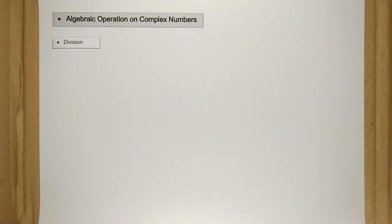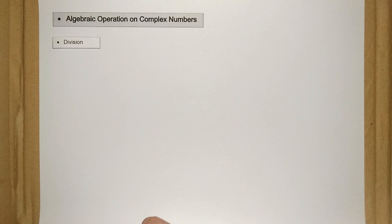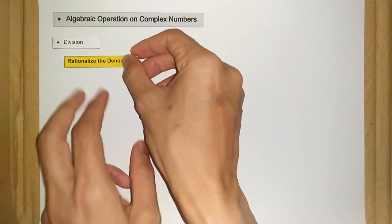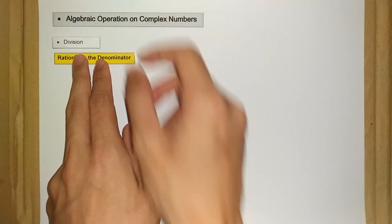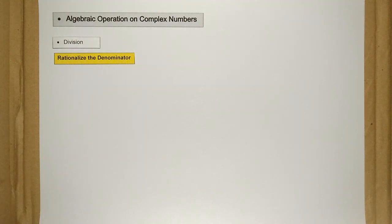Let's do the division on complex numbers. For your information, we don't simply divide complex numbers as we do for real numbers. The trick when dealing with complex numbers is what we call rationalizing the denominator. The best way to learn about this is through an example.